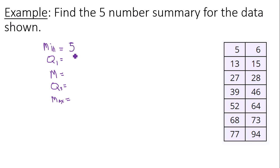So the minimum is 5, first quartile is 15, the median is 42.5, the third quartile is 68, and the maximum value is 94. And that's how you find the five number summary.